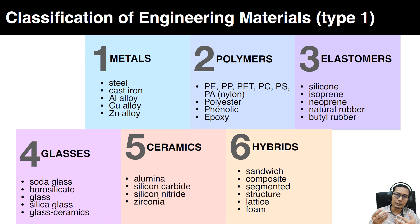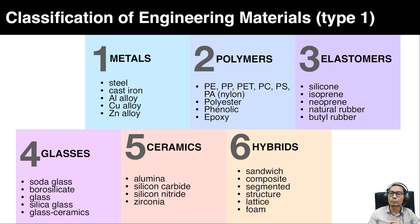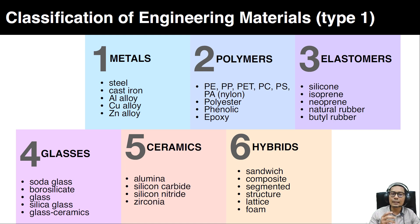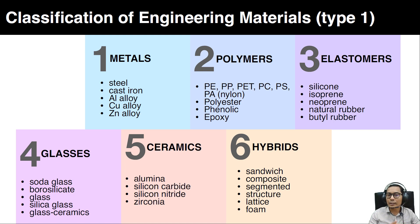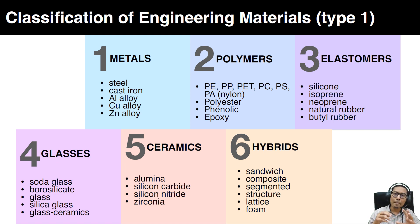Examples of metals are steel, cast iron, aluminium alloy, copper, and zinc alloy. Kinds of polymers include PE, PET, polyester, phenolic, and epoxy. Types of elastomers include silicon, isoprene, neoprene, natural rubber, and butyl rubber. For glasses, examples include soda glass, borosilicate glass, silica glass, and glass ceramics. The ceramics group includes alumina, silicon carbide, silicon nitride, and zirconium. Hybrid materials include composites, segmented structures, lattices, and foam.